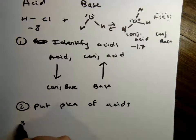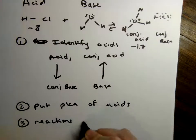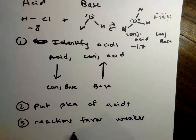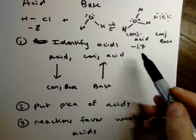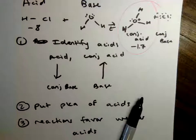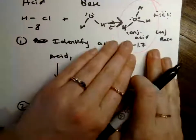And then the last thing is reactions favor weaker acids. So the side that's going to be the weaker acid, in this case, this is the weaker acid because it's a less negative number. It's less acidic. It has a larger pKa. Then the reaction is going to proceed forward. It's going to favor the products.